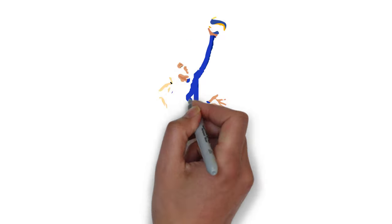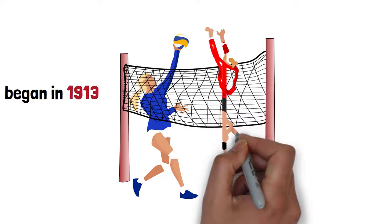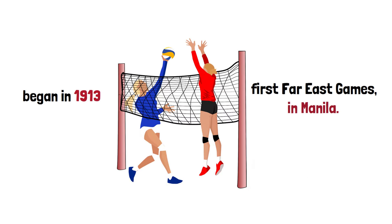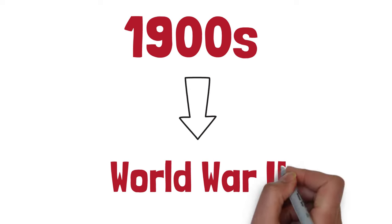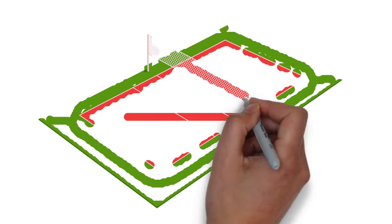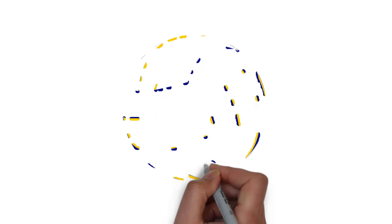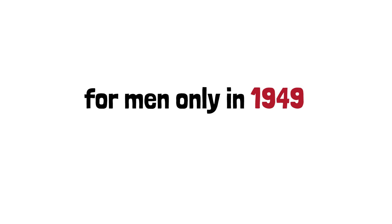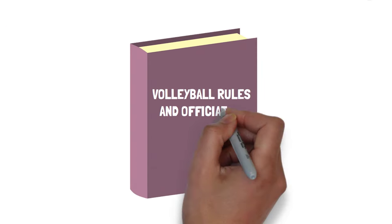International volleyball competition began in 1913 with the first Far East Games in Manila. During the early 1900s and continuing until after World War II, volleyball in Asia was played on a larger court, with a lower net, and nine players on a team. The FIVB sponsored World Volleyball Championships — for men only in 1949, for both men and women in 1952 and succeeding years — which led to acceptance of standardized playing rules and officiating.